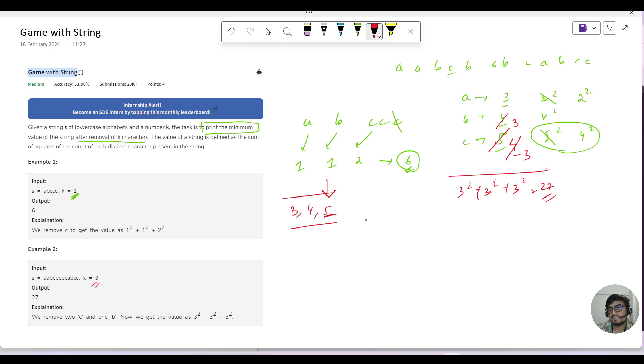So the largest number is 3, 4, and 5. We will rearrange it in descending order. So it will become 5, 4, 3. Then we will remove the top element, decrement it, and rearrange again to maintain the order using some data structure.